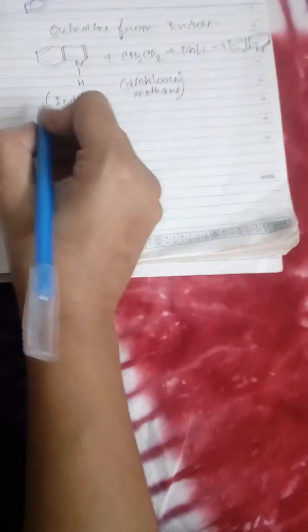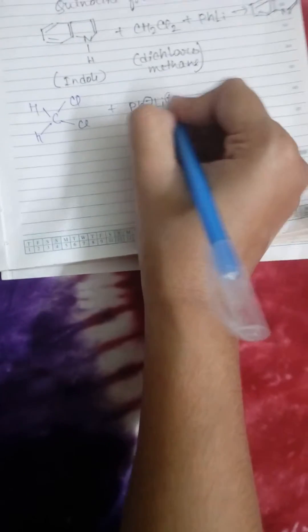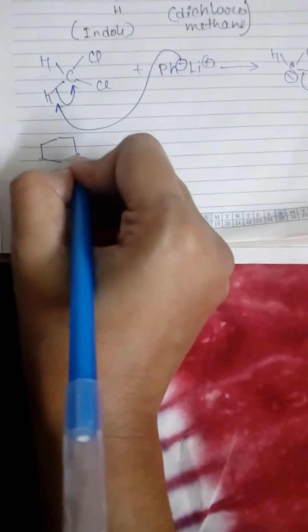At first, the hydrogen of dichloromethane will be attacked by pH minus and form an anion. This anion loses a chlorine and gives us the carbene, and carbene is always an electron deficient compound.